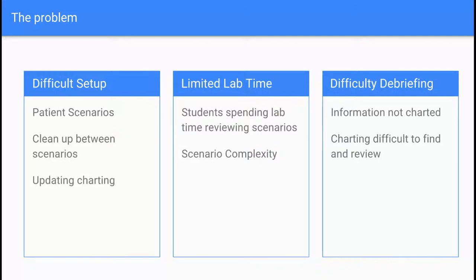Another problem we hear often is that most schools have very limited lab time. You have a lot of students, only one lab or however many mannequins, and you have to get all your students through. It can take a lot of time when students come in and have to spend the first 15 minutes reviewing the scenario before they actually start their work. You might also need students in a basic skill setting to just do one or two skills, without a complicated scenario.